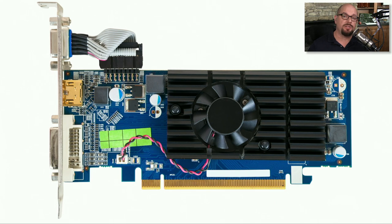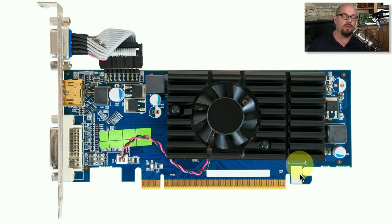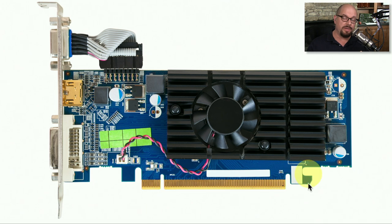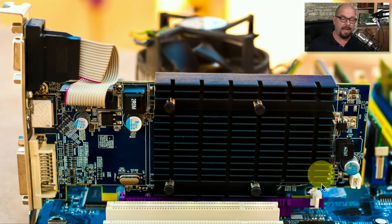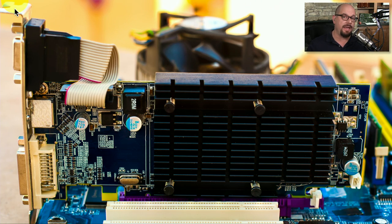Installing a PCI Express card is almost identical to installing one in a PCI interface. One characteristic of larger PCI Express cards is that there's often a hook near the back that allows you to anchor the card on the far side, with a screw anchoring the card to the case itself. When removing the card, you'll need to remove the screw and also release the latch connecting the card to the motherboard on the other side.